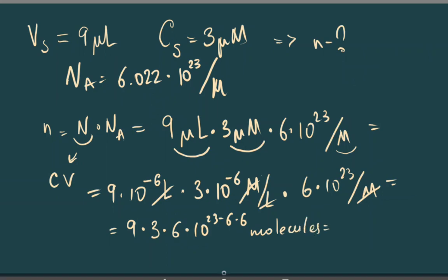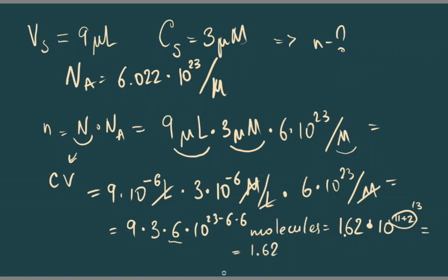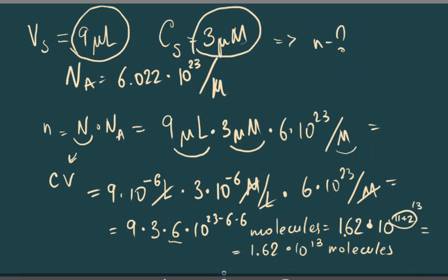We compute: 9 × 3 = 27, and 27 × 6 = 162. The exponent is 10^(23−12) = 10^11. So we have 162 × 10^11 molecules. Representing this in scientific notation: 23 − 12 = 11, and moving the decimal point gives 1.62 × 10^13. The final answer is 1.62 × 10^13 molecules in our 9 µL of 3 µM concentrated master mix.